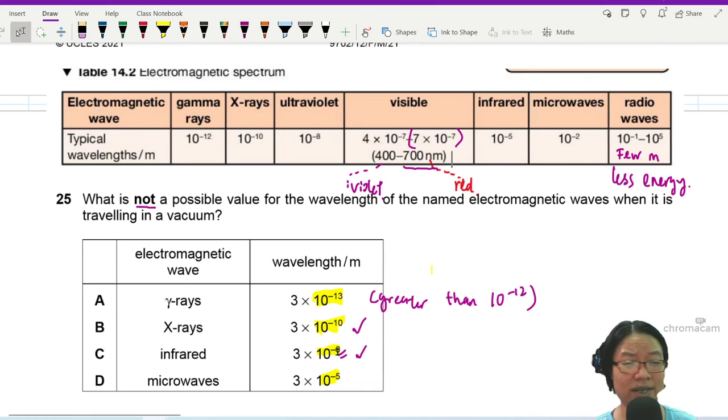But I tell you what is definitely not possible: microwave. Microwave cannot be negative 5 because microwave is closer to a radio wave, so this one should be negative 10. This is wrong; this should be 10 to the negative 2. So this one is D.